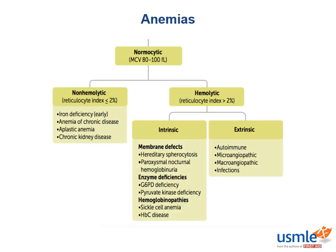And lastly, let's talk about the third part of the algorithm, which is normocytic anemias. Normocytic anemias are actually the most complicated, which is why they're saved for last. These anemias have a normal-sized red blood cells but so many different etiologies. One way to categorize them is whether the disorder results in destruction of red blood cells. A non-hemolytic anemia cannot stimulate red blood cell production, so the reticulocyte count will be low — a reticulocyte index less than or equal to 2%. If the body is destroying red blood cells, it will try to compensate, resulting in a reticulocyte count greater than 2%.